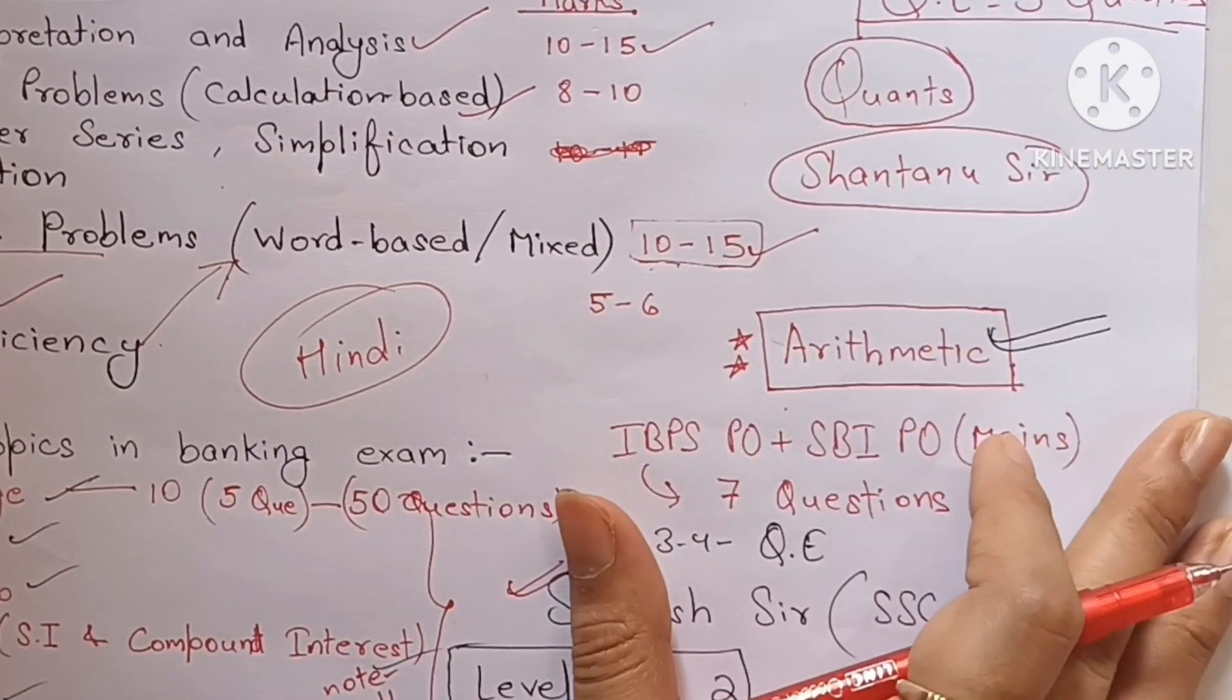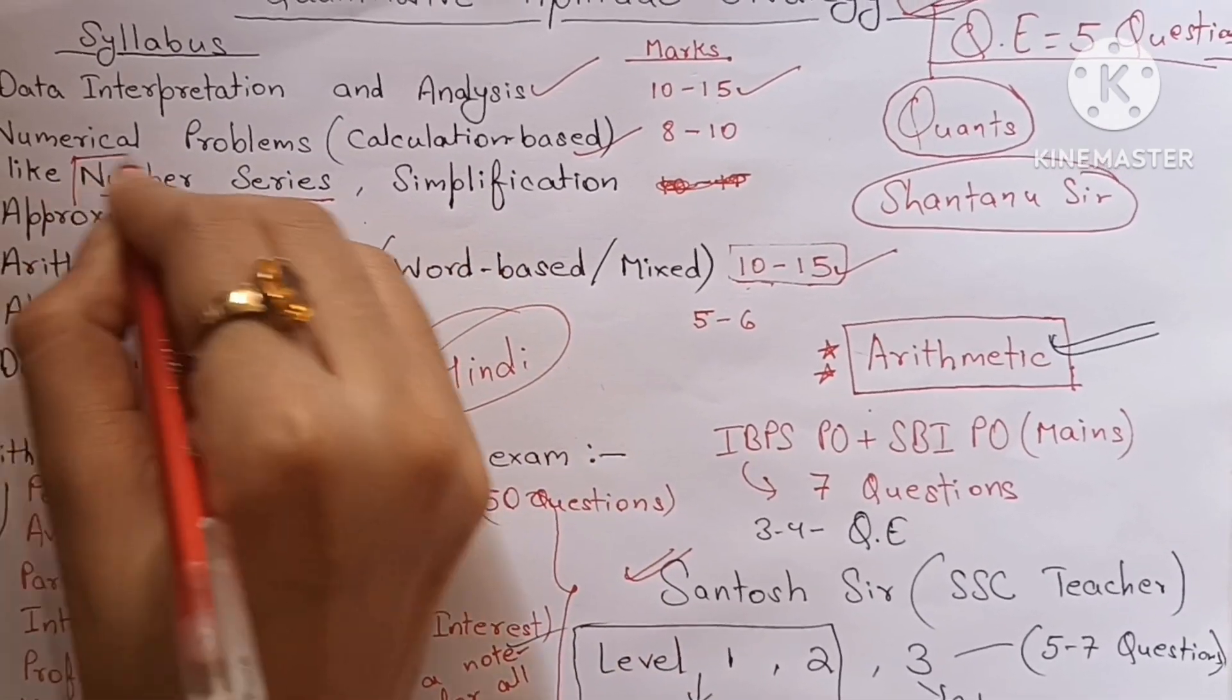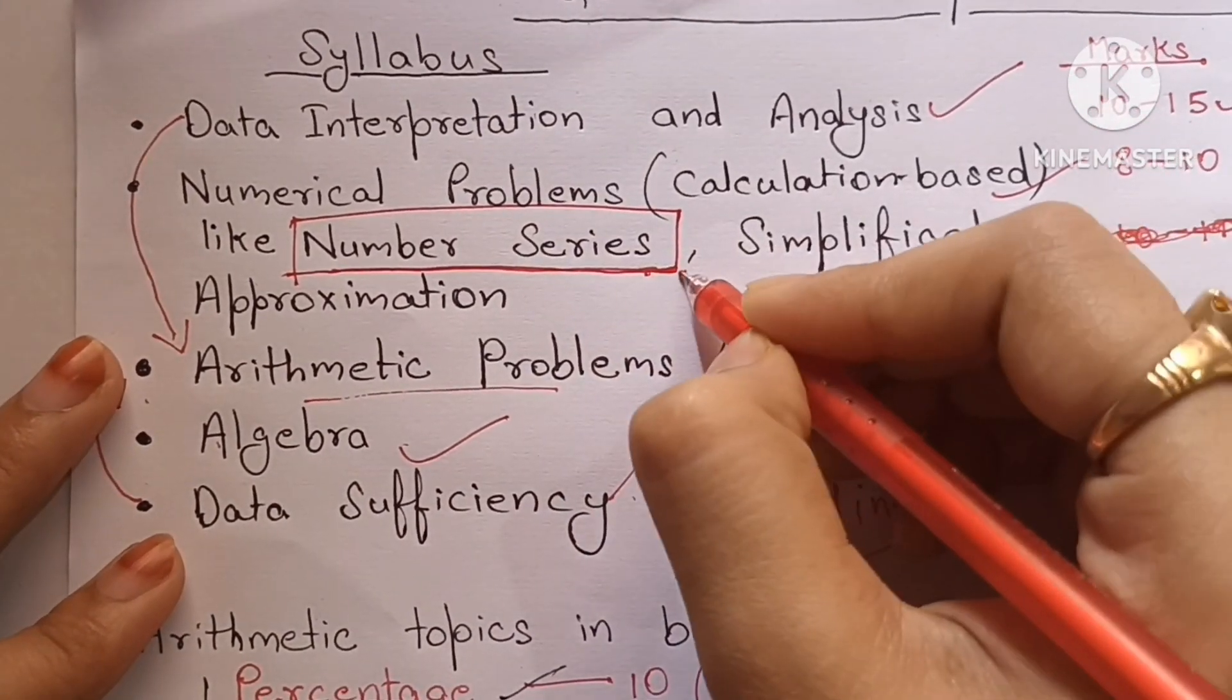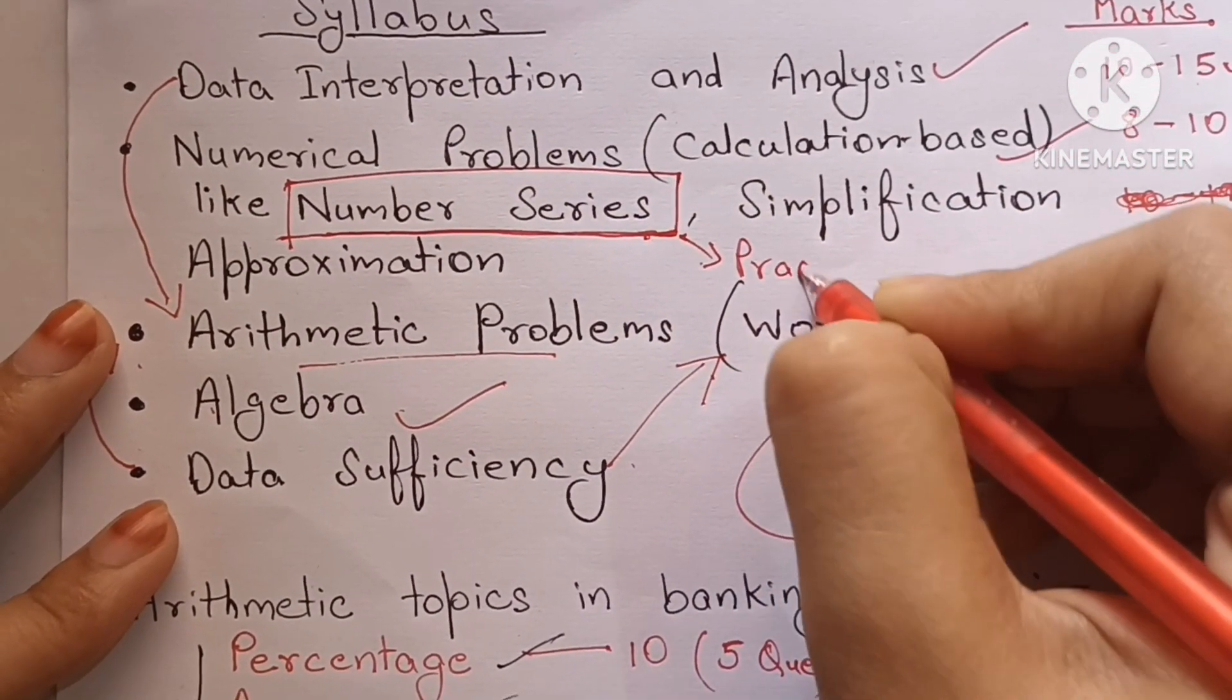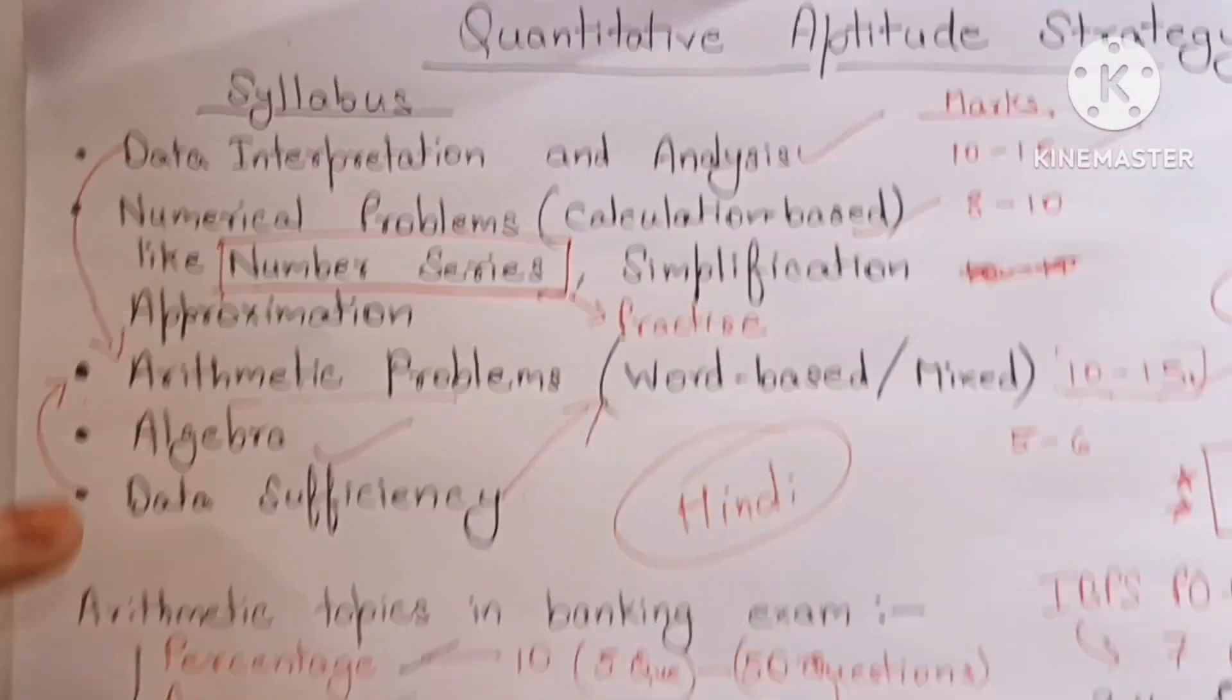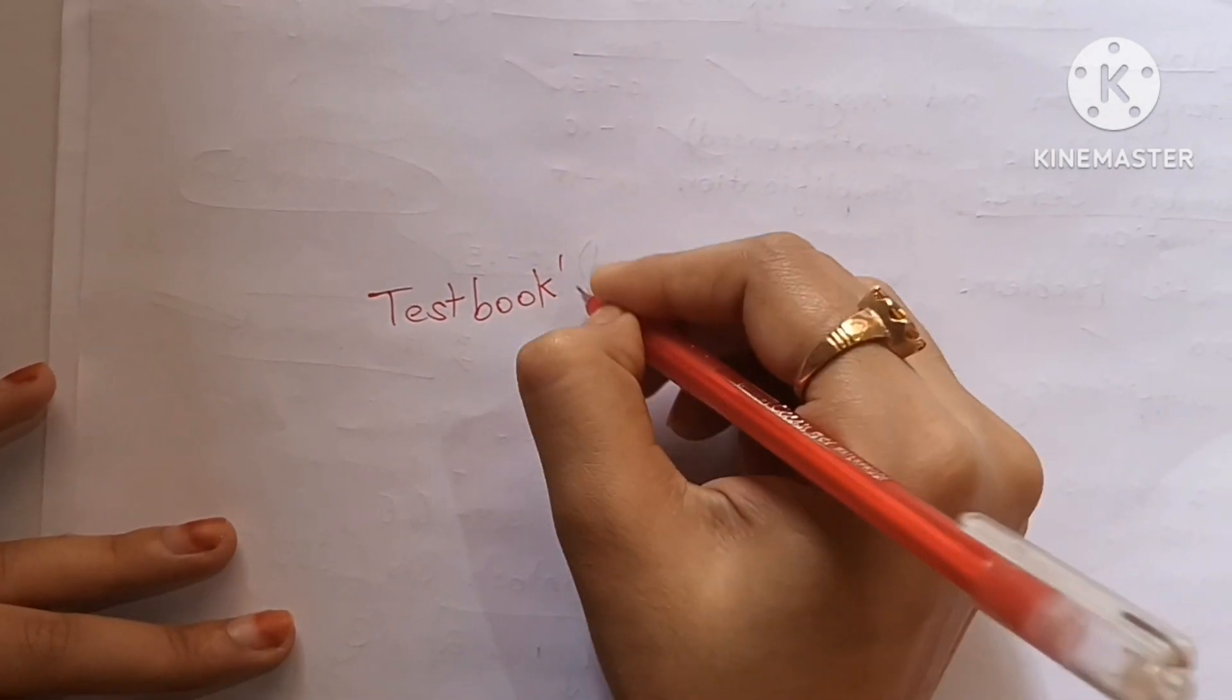Now missing number series is something that students usually skip. Don't be afraid of this. Once you practice a lot of questions you build the intelligence to guess the number in lesser time. And for practicing these questions, buy the book of Test Book that is 4000 questions practice set. You will get plenty amount of questions in this book.